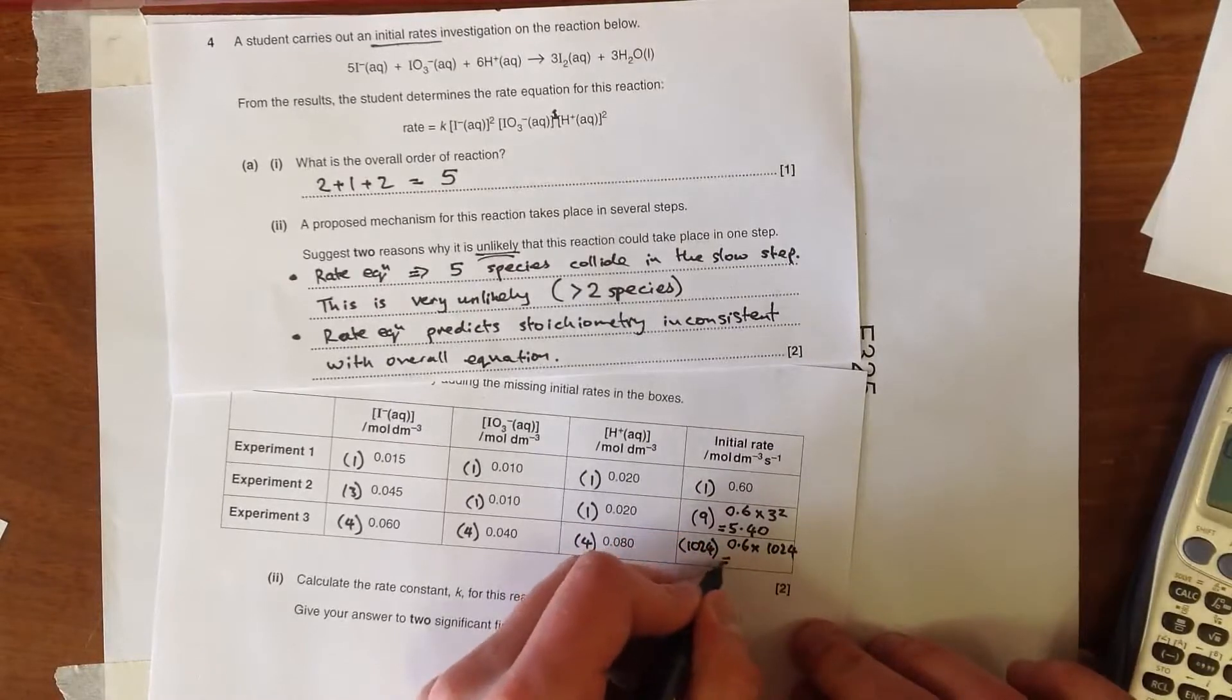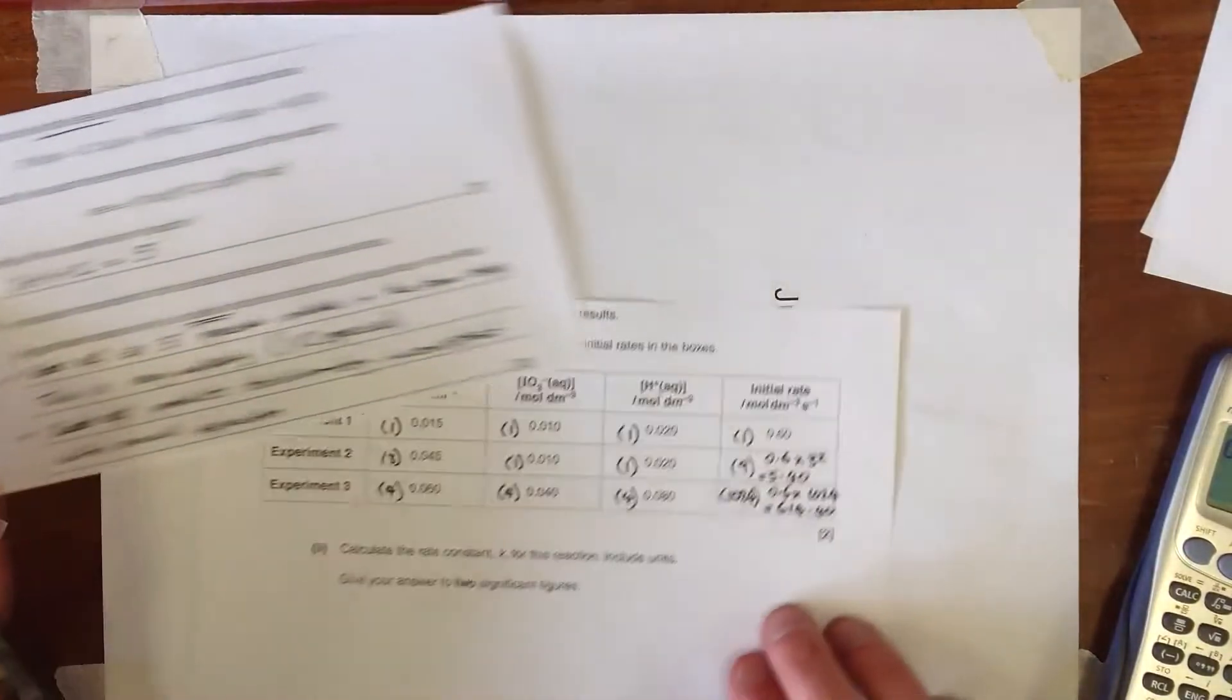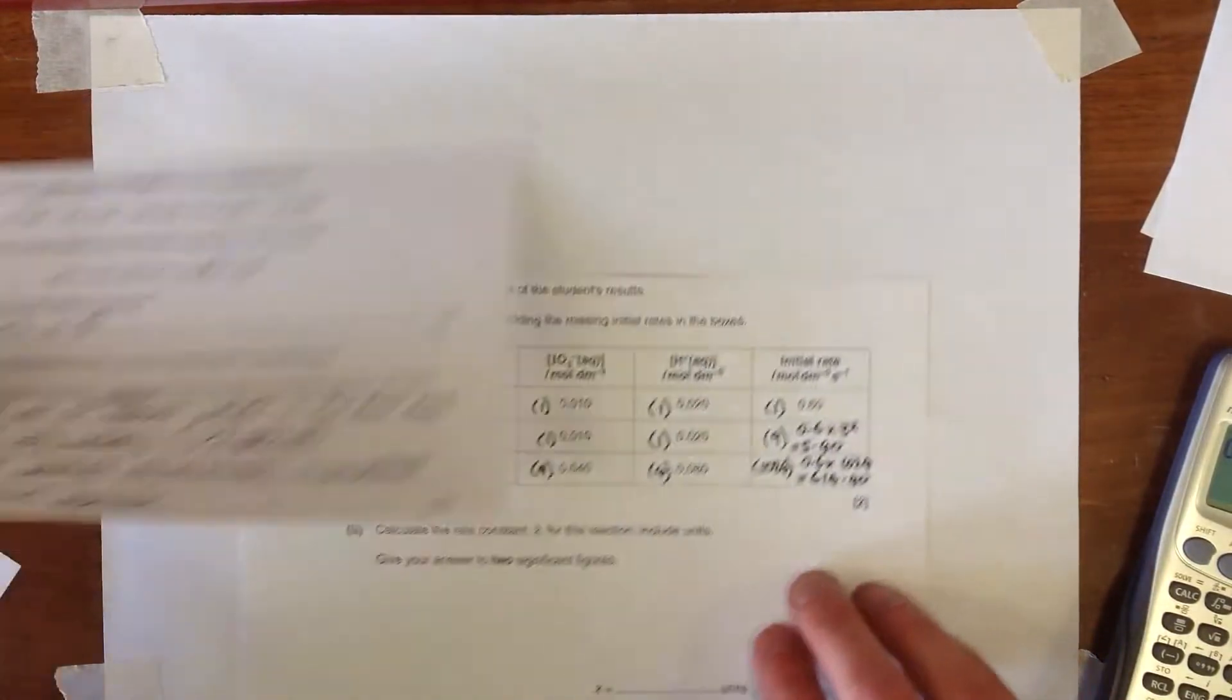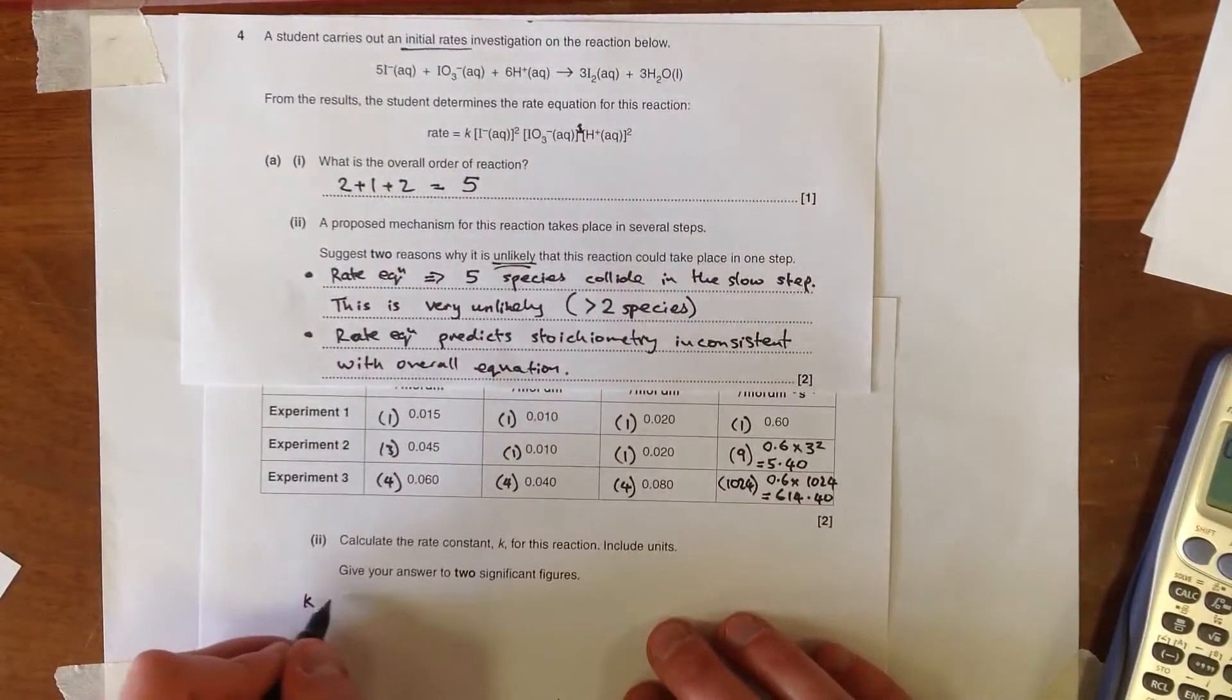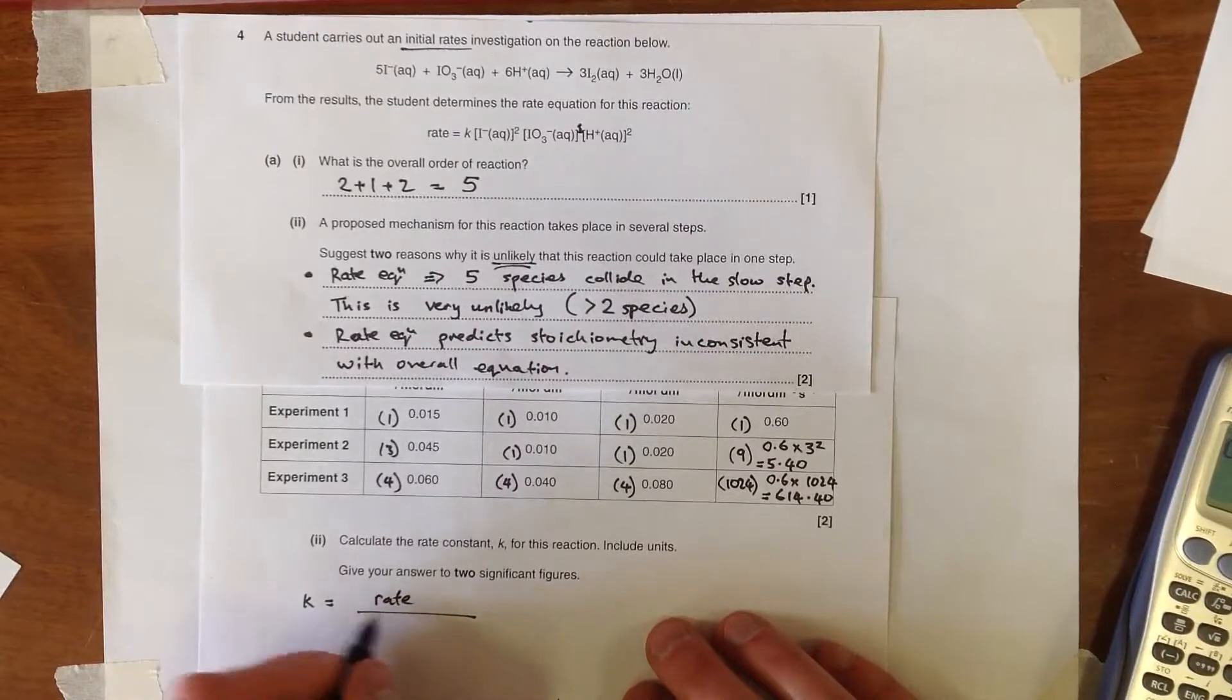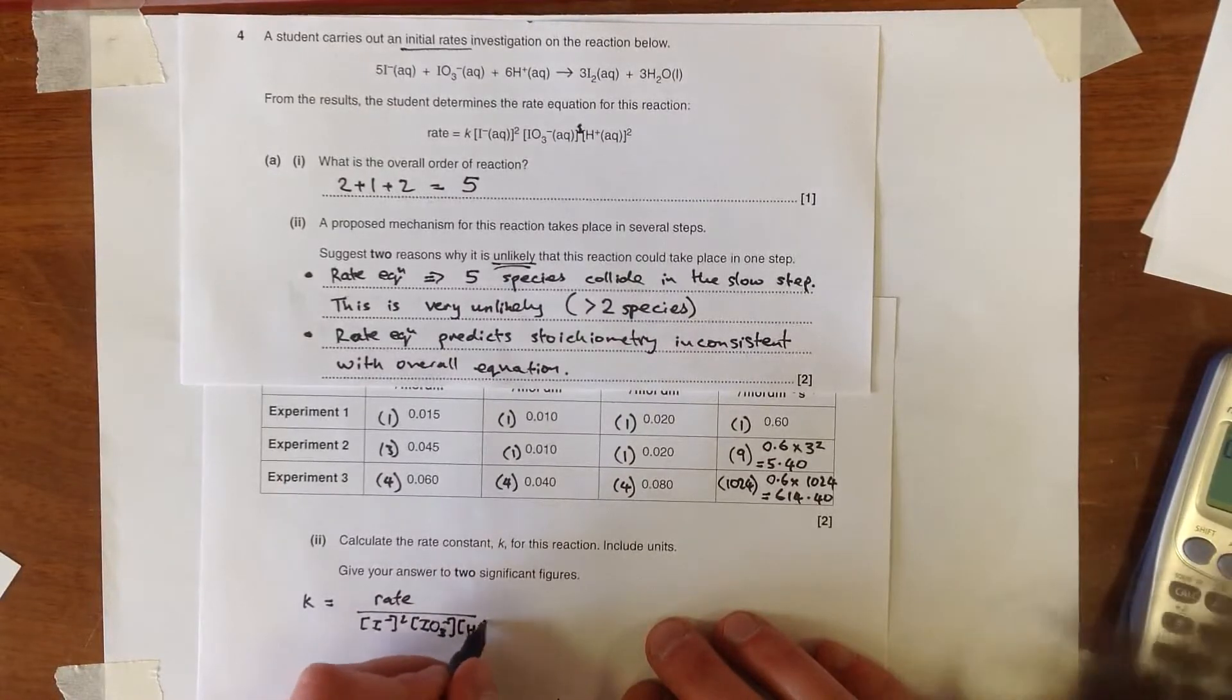which is going to give us 614.40 for our initial rate. Now we need to calculate the rate constant for this, so again we keep in mind what our rate equation was. We can rearrange that to give the k value, it's just going to be the rate divided by I minus squared, IO3 minus, and H plus all squared.